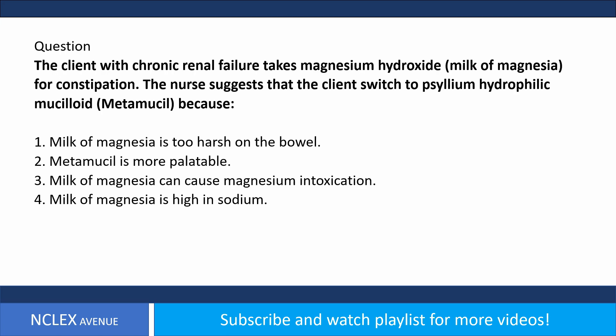A client with chronic renal failure takes magnesium hydroxide (milk of magnesia) for constipation. The nurse suggests that the client switch to psyllium hydrophilic muciloid (Metamucil) because: one, milk of magnesia is too harsh on the bowel; two, Metamucil is more palatable; three, milk of magnesia can cause magnesium intoxication; four, milk of magnesia is high in sodium.